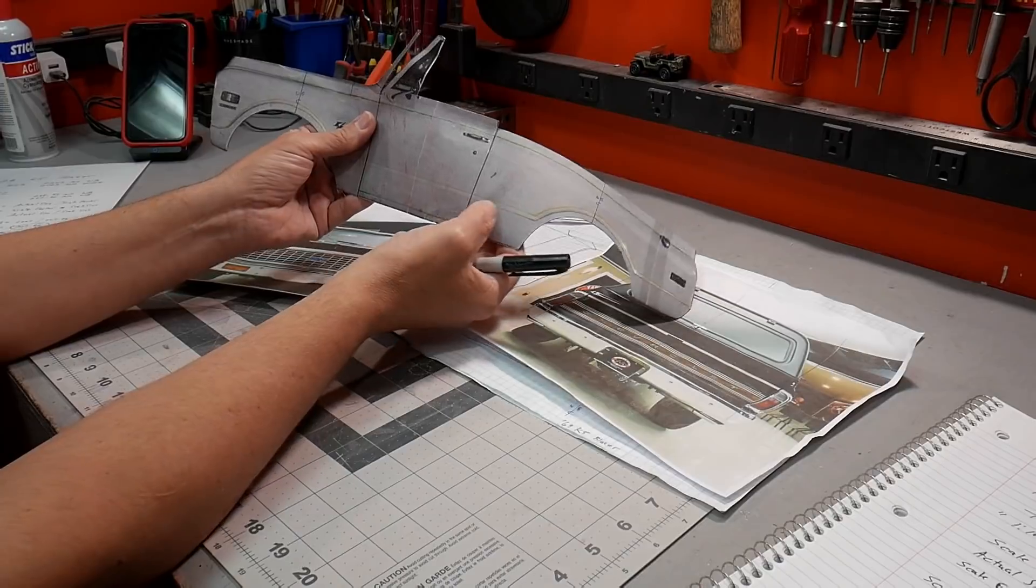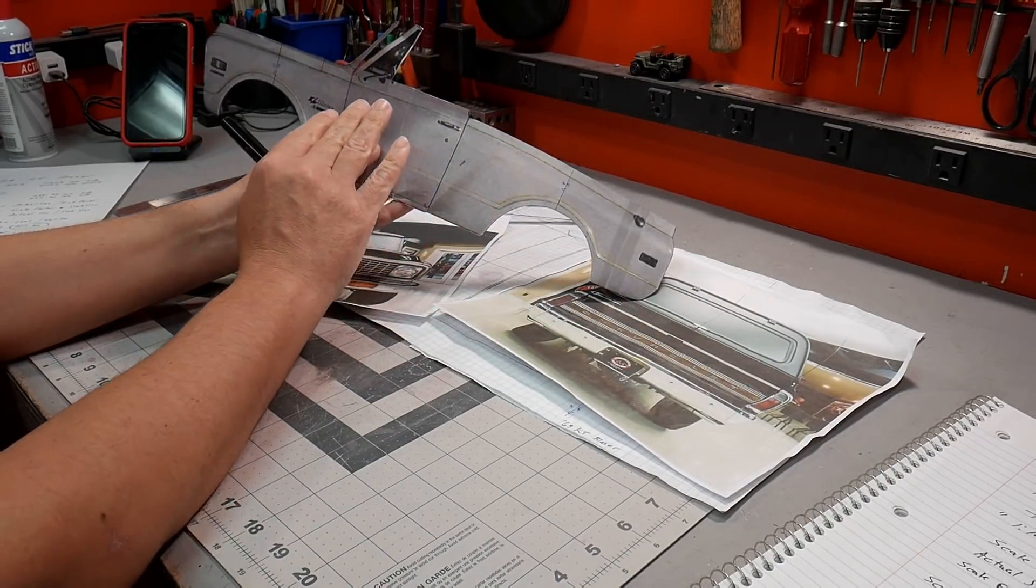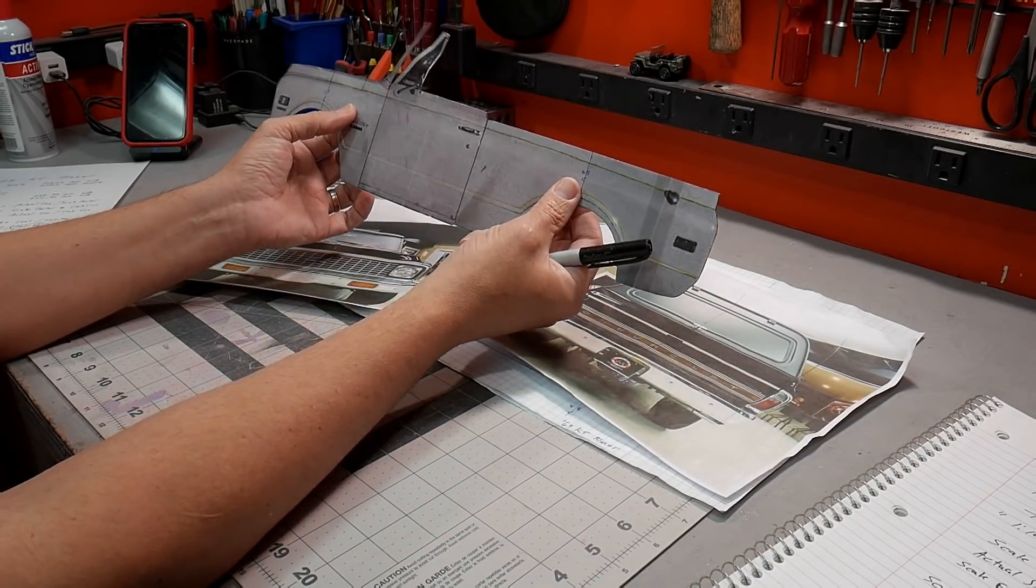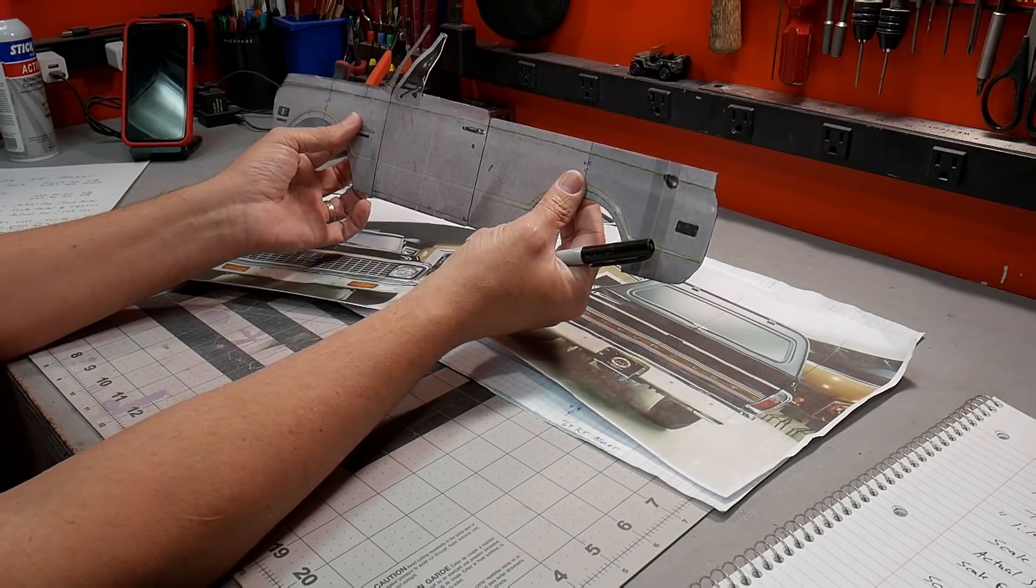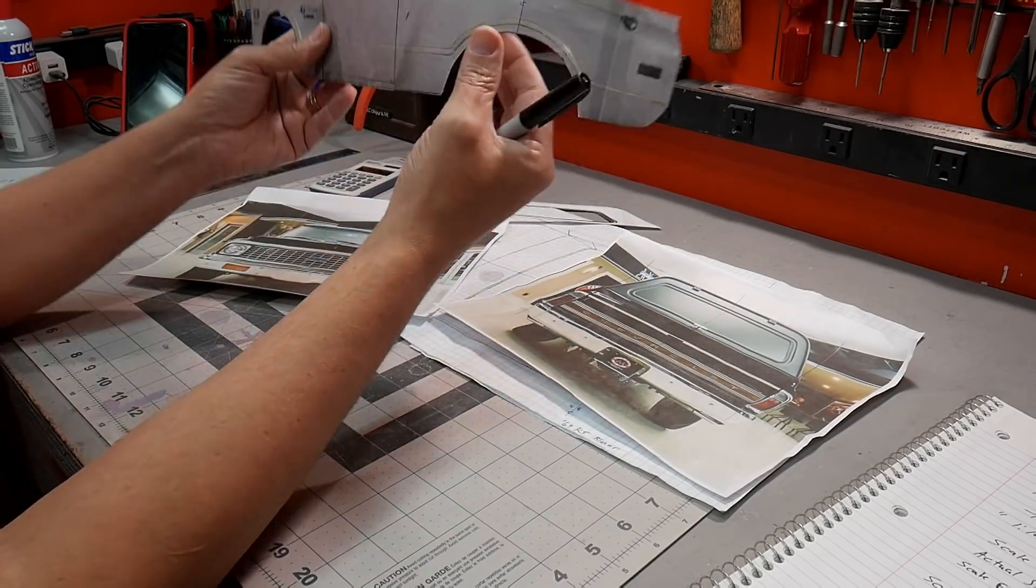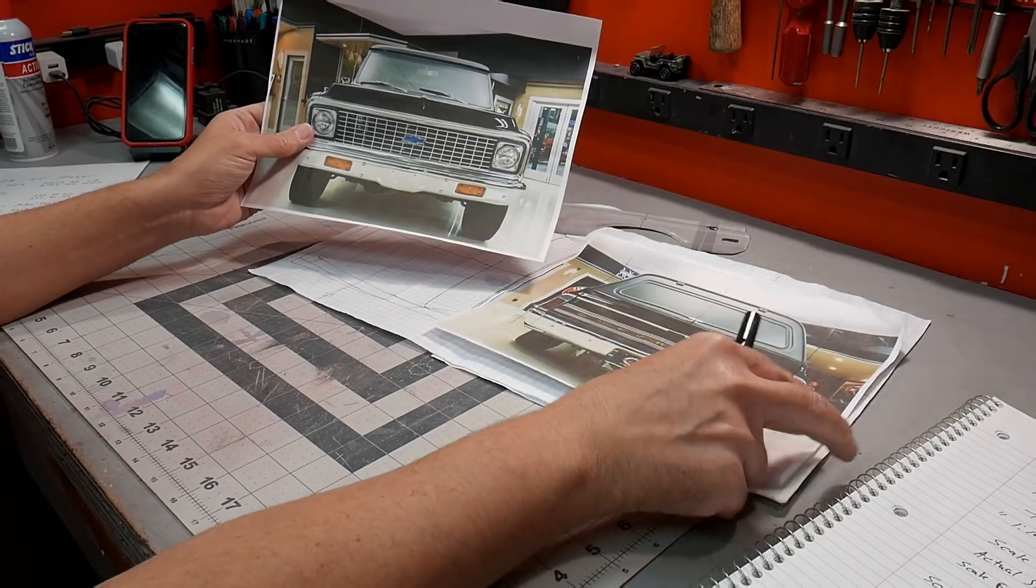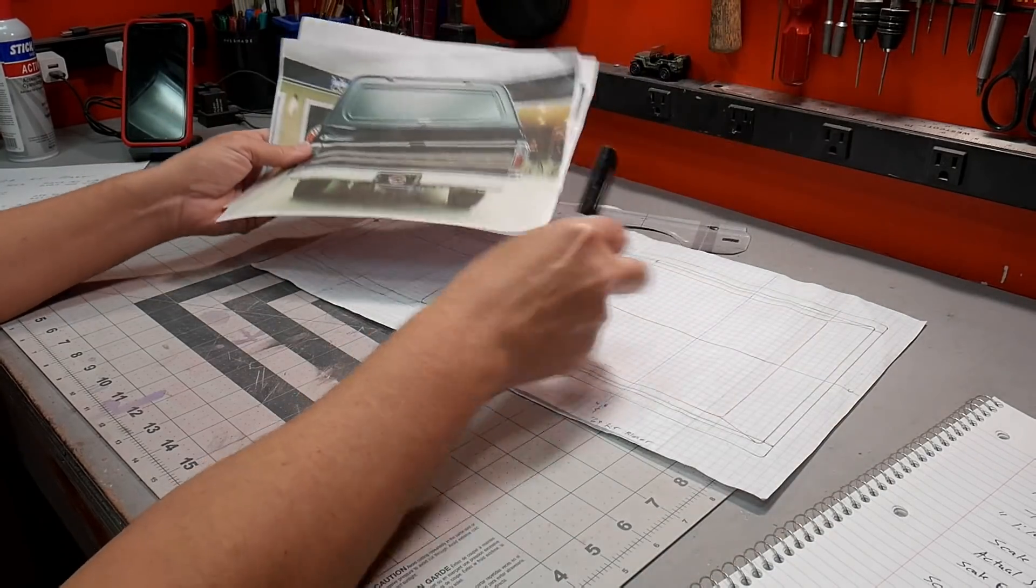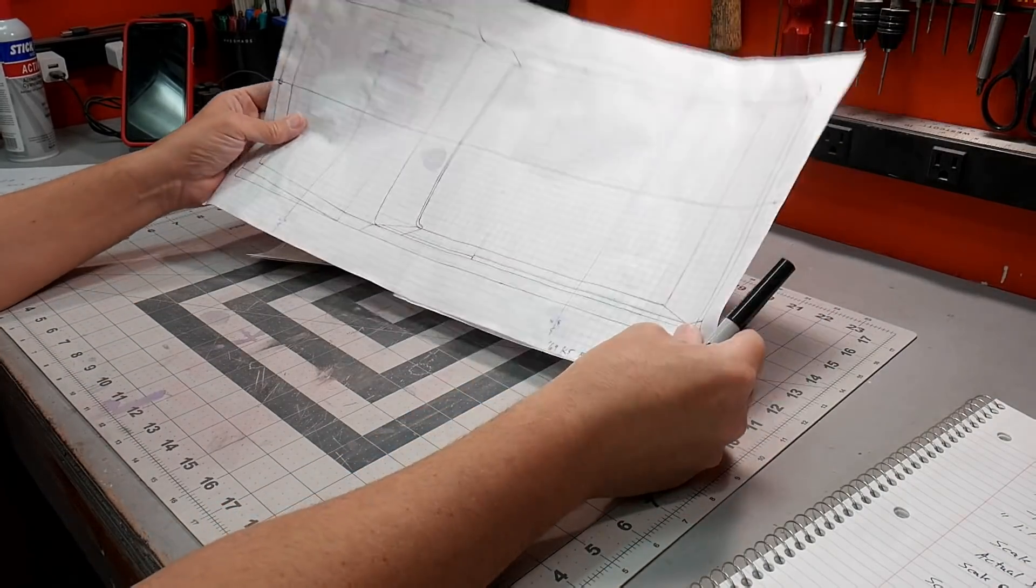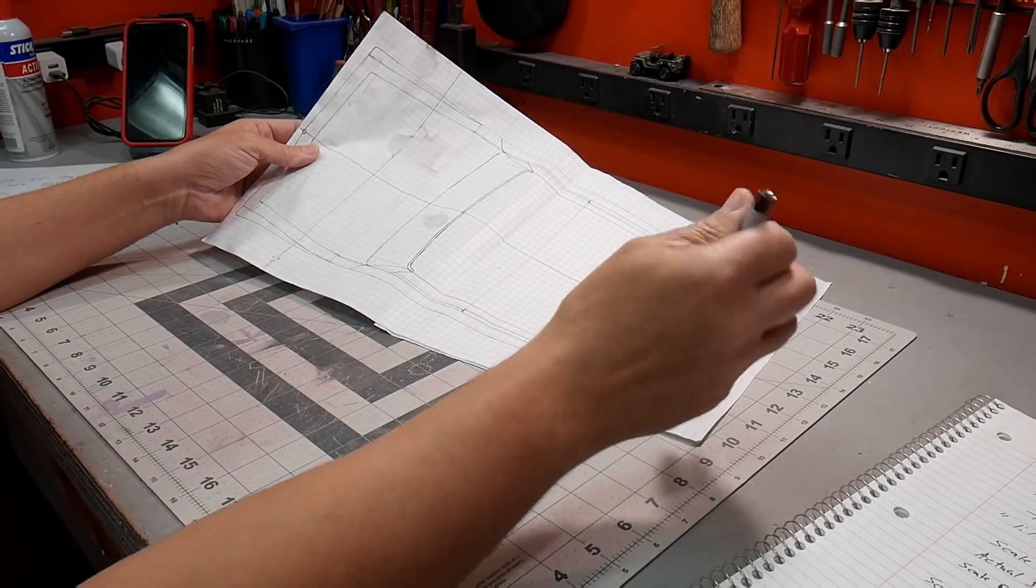And then what this will also give you is a way to have almost a paper template. Now it's not going to be perfect. This is obviously flat 2D and the body is 3D. It's rounded. They have tapers from front to back. There's a lot of things that don't translate. So you have to just kind of take this as a starting point and kind of work from there and see how this is starting to come together. But that's a good place to start. And essentially you do the same thing for the front and for the rear. And typically most people don't climb up on a building and take a picture of their truck straight down. So you'll probably never find those.